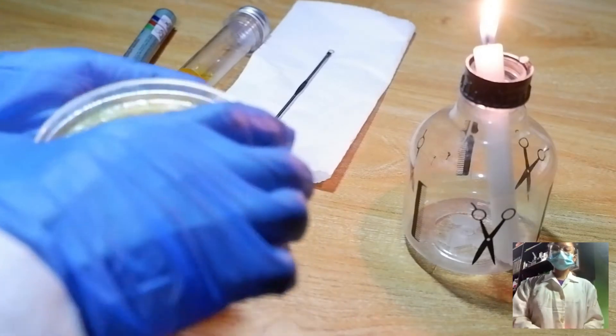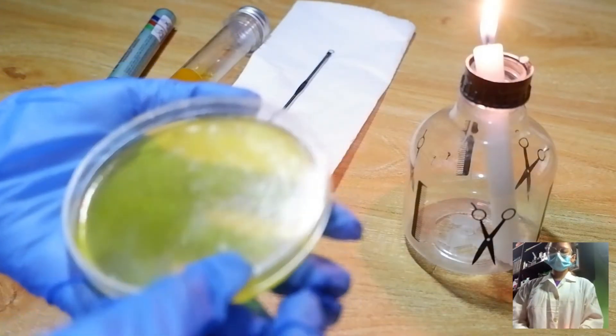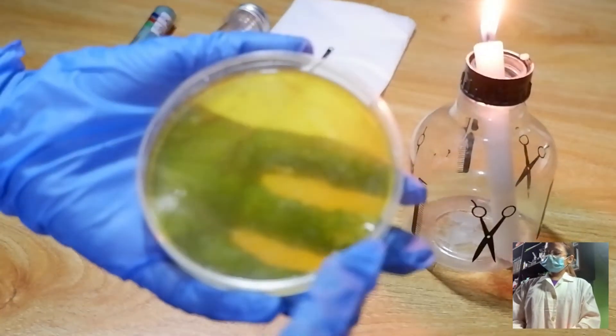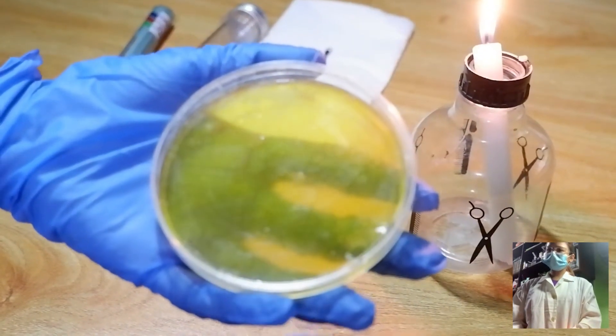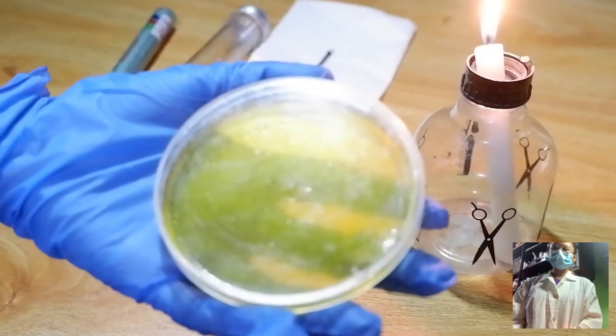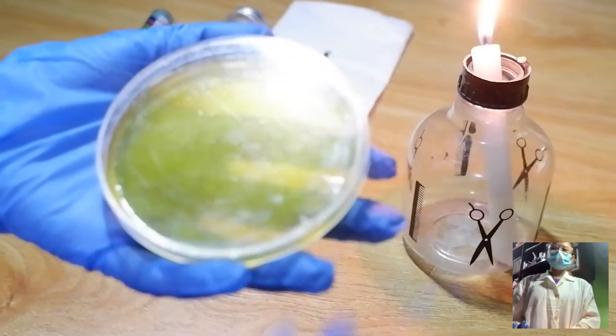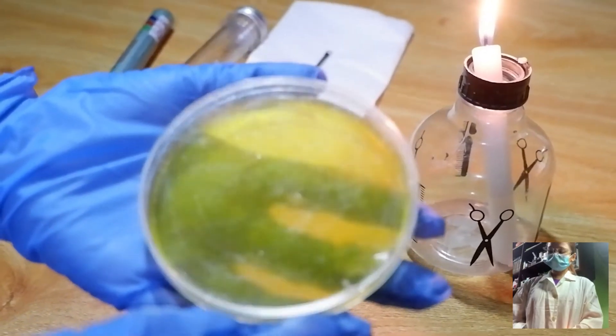First, we will divide our plate with four quadrants in this method. Remember to stay near the edge of the plate where we will do the streaking. In order to make this clear, I will mark the bottom of our plate and identify the four areas.